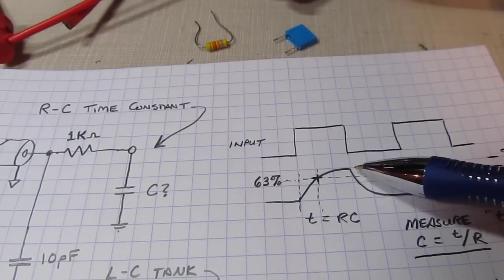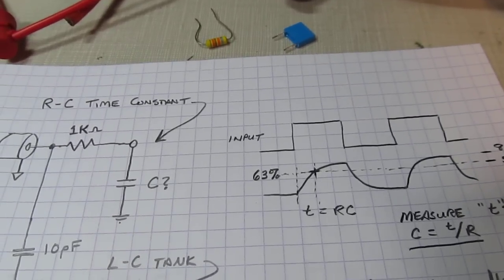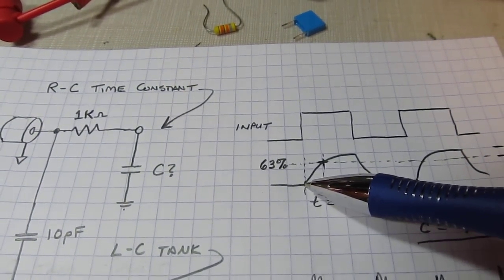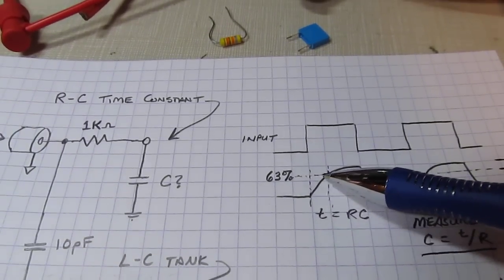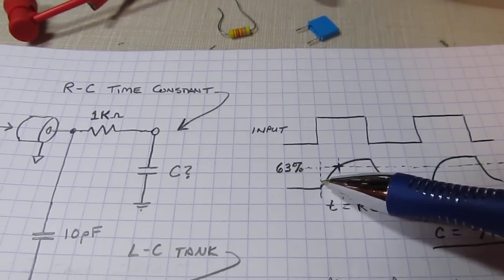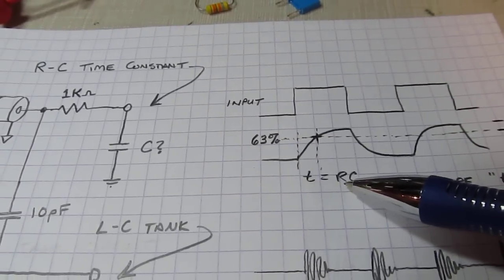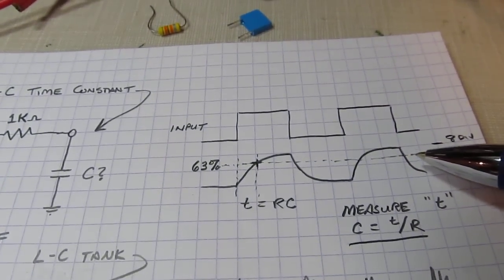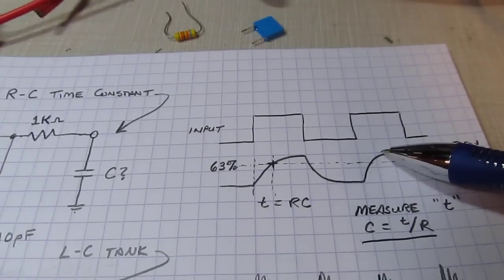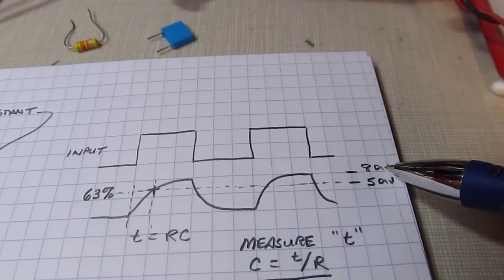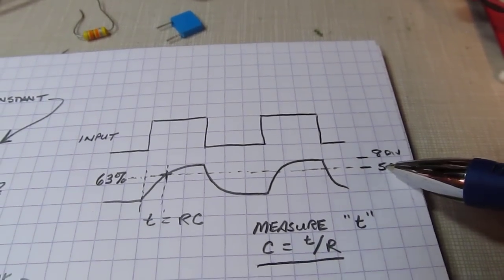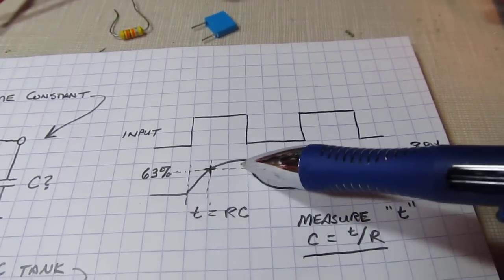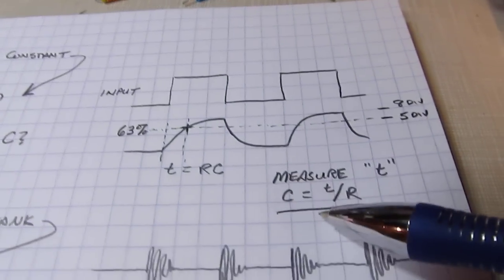Here's our fast input, and then the output is going to have this exponential rise or fall time. The simple fact of the matter is that this exponential rise is going to reach 63 percent of its final value over a time period that's equal to the product of the resistor times the capacitor. To make life even easier, if we adjust our scope so that this signal from top to bottom occupies eight divisions on the scope screen, 63 percent of eight is five. So all we need to do is measure how long it takes to go from baseline up five divisions out of eight. Once we know that, we can calculate the capacitor very simply by taking that value divided by R.